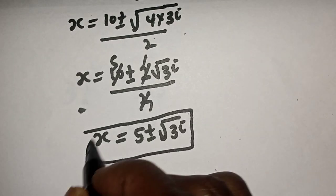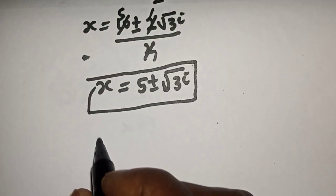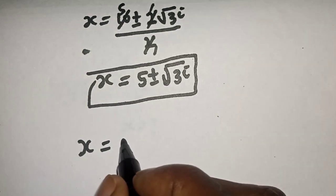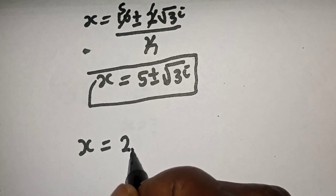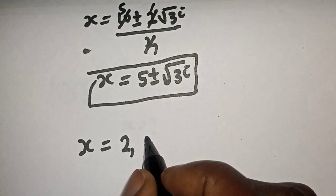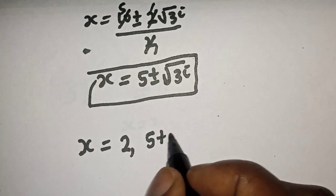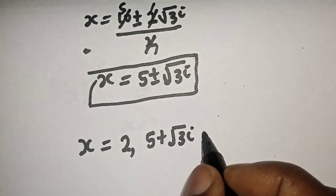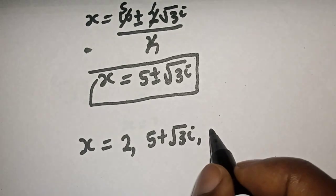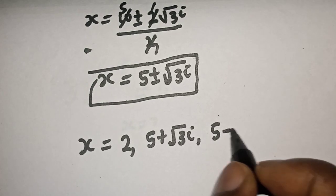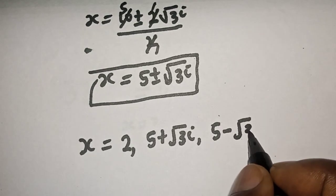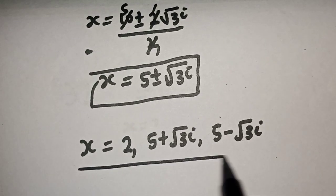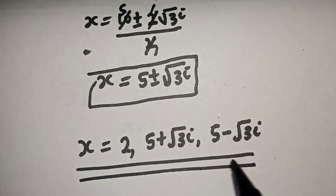Simplifying, x is equal to 5 plus or minus root 3 i. This is the second value of x. Therefore our answers are: x is equal to 2, x is equal to 5 plus root 3 i, and x is equal to 5 minus root 3 i. If you enjoyed the class, please don't forget to like, share, comment and subscribe.